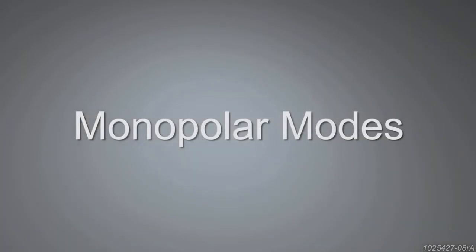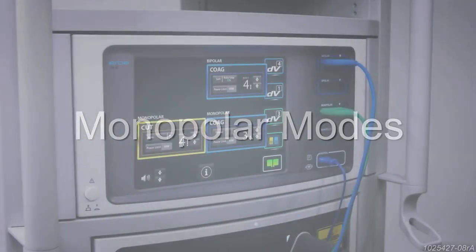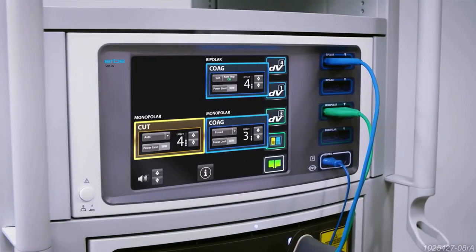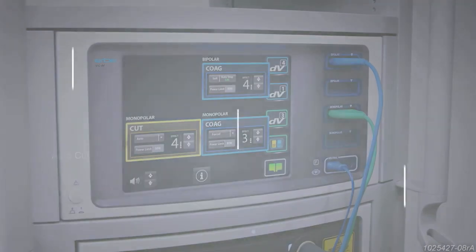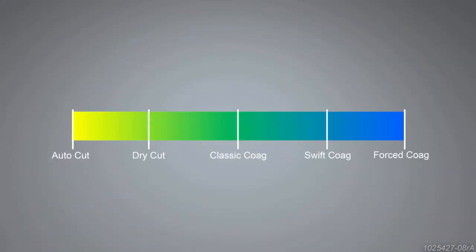The HerbeVio DV offers five monopolar modes to create a range of tissue effects on a continuum of pure cut to primarily coagulation: autocut, dry cut, classic coag, swift coag, and forced coag.